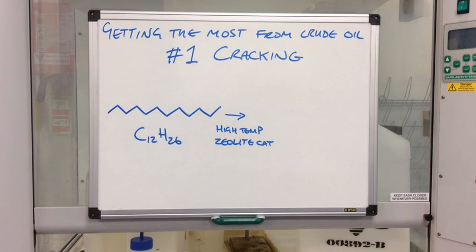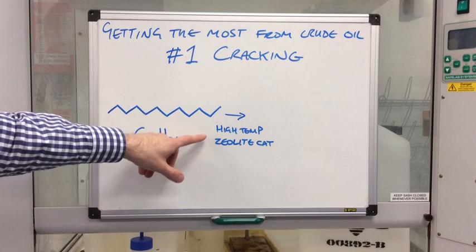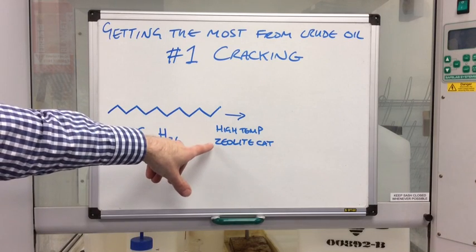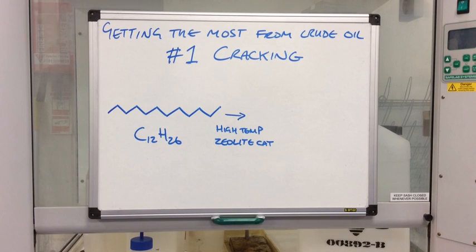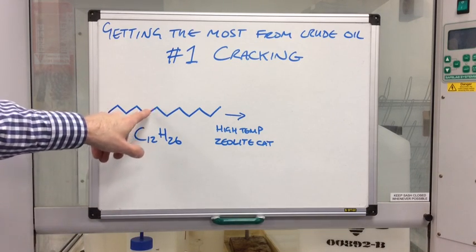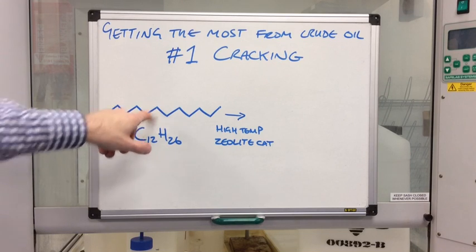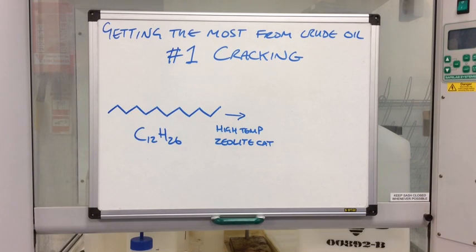So what they do is they heat it up to a very high temperature in the presence of a catalyst. And the catalyst they used is called zeolite. And what that does is it breaks one of these carbon-carbon single bonds in the chain. So effectively they crack the chain.